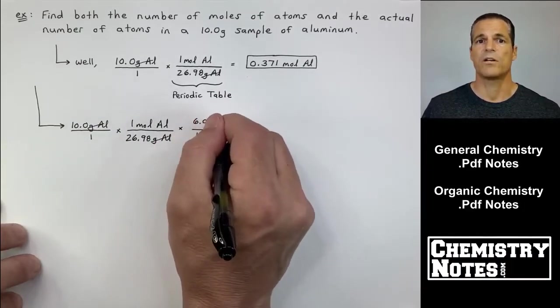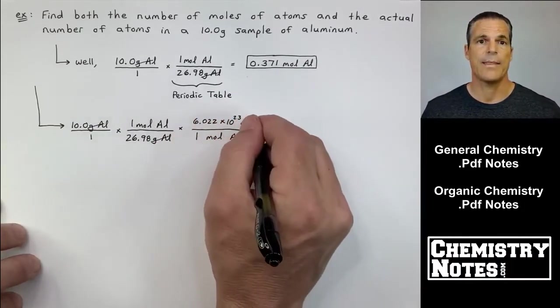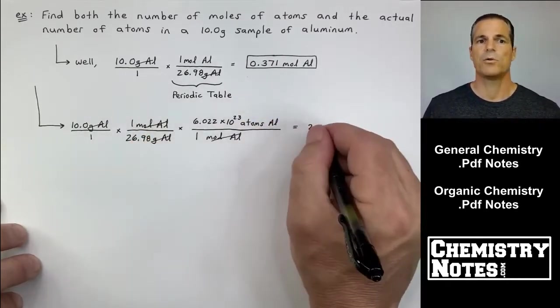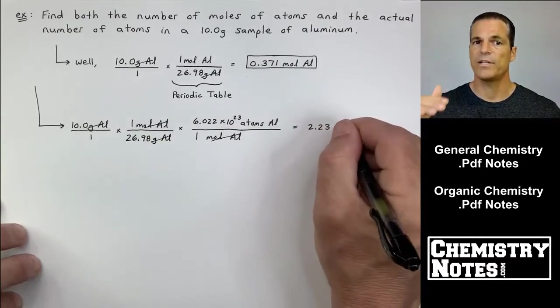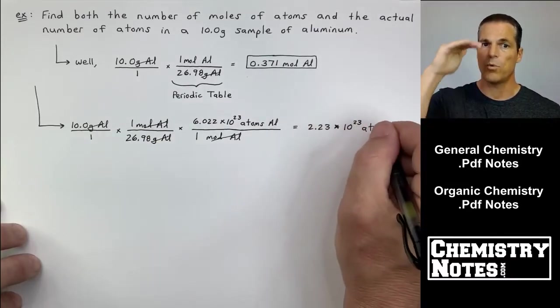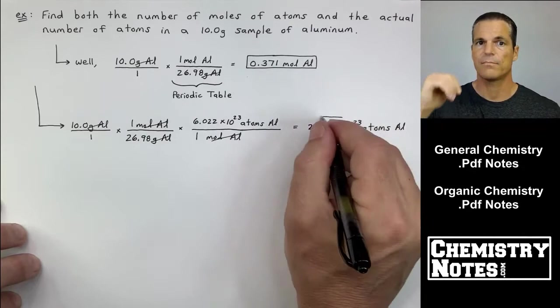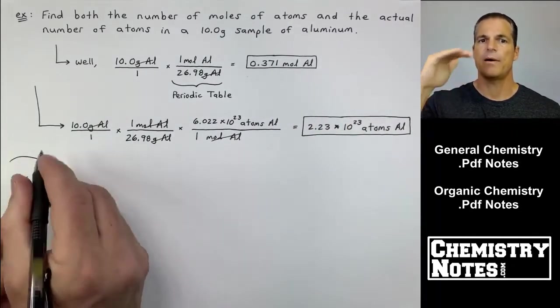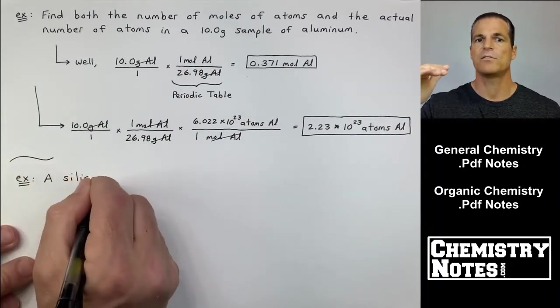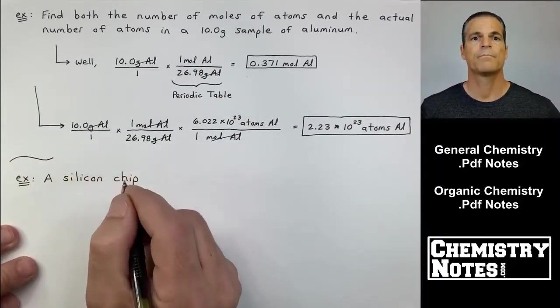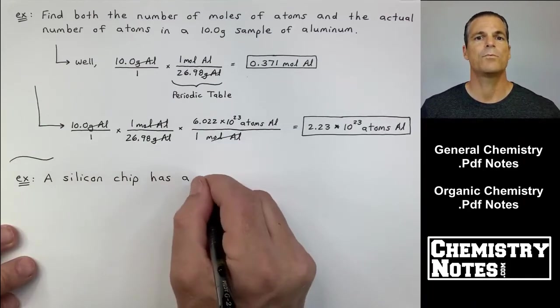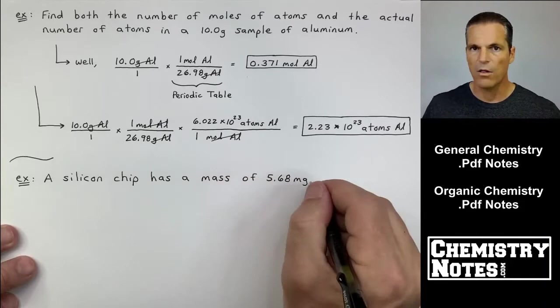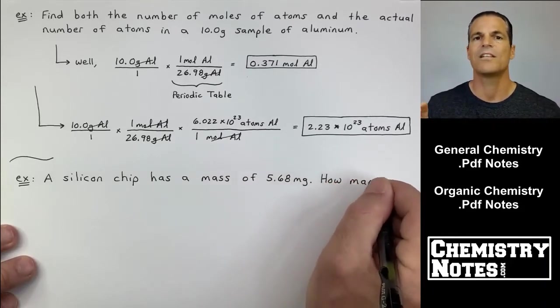All right. Well, now that I'm in moles of aluminum, I could have gone in one step to atoms. But I'm going to start from the beginning again. So 10.0 grams of aluminum over one divided by 26.98 grams of aluminum with one mole of aluminum on top. That gets me into moles of aluminum. For every one mole of aluminum on the bottom, I have 6.022 times 10 to the 23rd atoms of aluminum. My answer, three sig figs, 2.23 times 10 to the 23rd atoms of aluminum. Follow the units, right? The units are more important than the numbers.